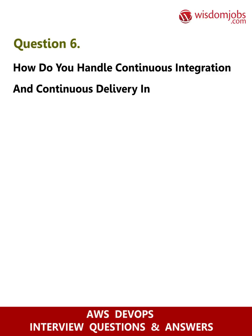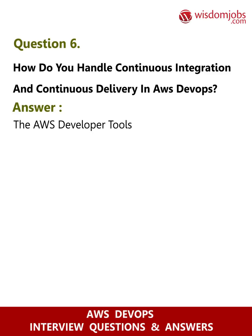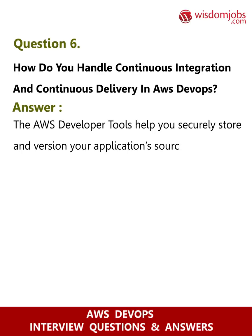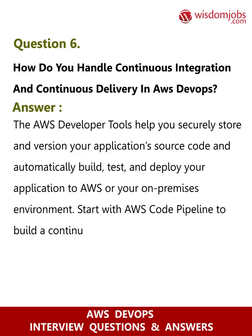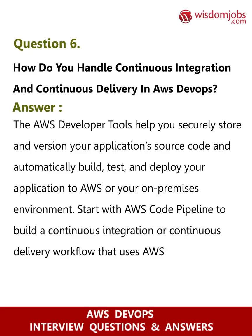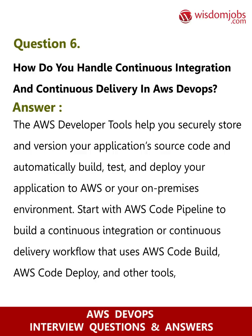Question 6: How do you handle continuous integration and continuous delivery in AWS DevOps? Answer: The AWS developer tools help you securely store and version your application's source code, and automatically build, test, and deploy your application to AWS or your on-premises environment. Start with AWS CodePipeline to build a CI/CD workflow that uses AWS CodeBuild, AWS CodeDeploy, and other tools.